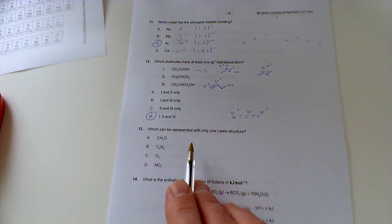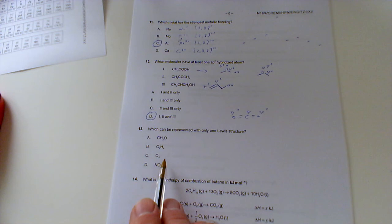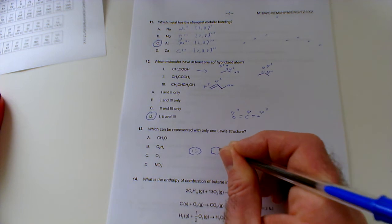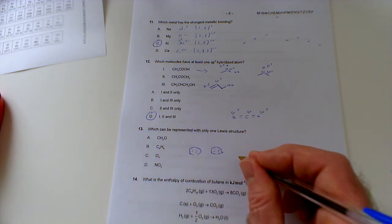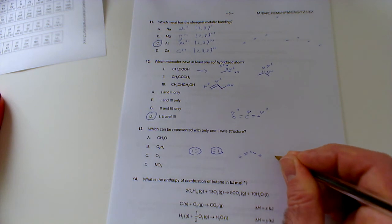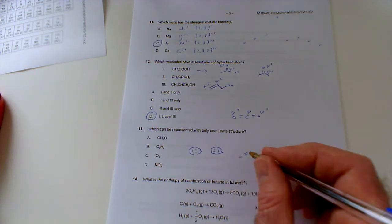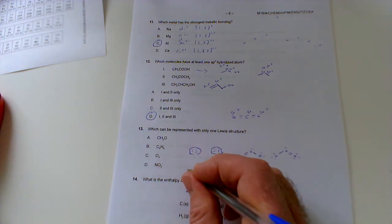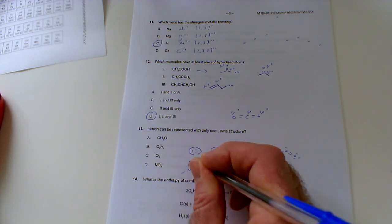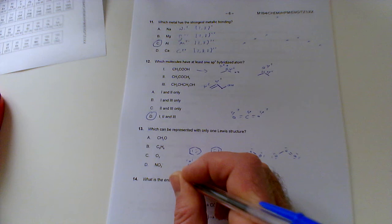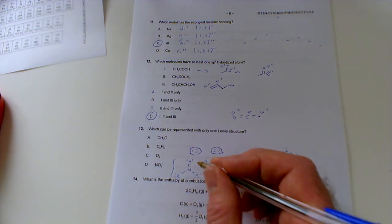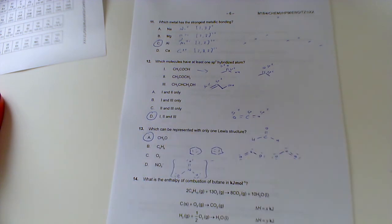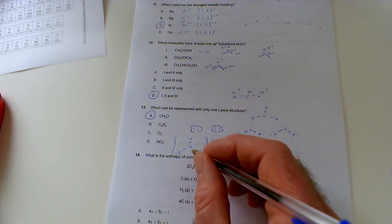Number 13: which can be represented with only one Lewis structure? We've got methanol, benzene, ozone, nitrate. You'll save yourself a lot of time if you know that some of these... Benzene you can draw more than one Lewis structure - you can draw that one and then swap the double bonds around to have that one. Ozone you can have the double bond there or you can have it here. They're not completely new structures unless I add the lone pairs of course. The nitrate, there's three possible ones you could draw depending on moving around the double bond. In reality what you actually have is resonance hybrids. Methanol is only one place for it, there's nowhere else I can put the double bond.